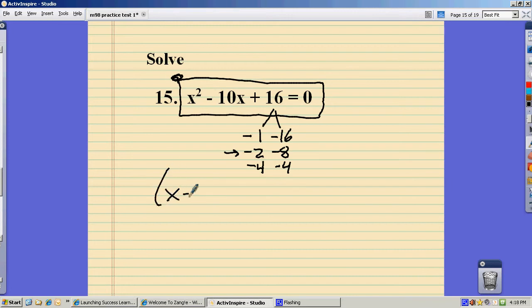So this would factor to x minus 2 times x minus 8. That's still equal to 0. These two things are multiplied together to give me 0.